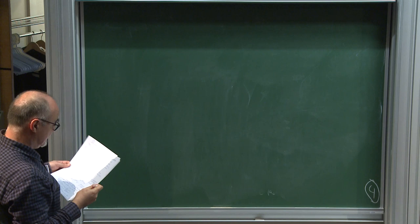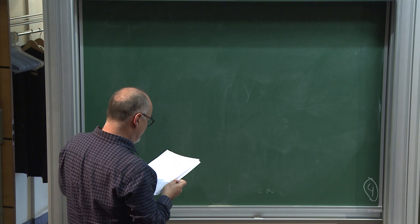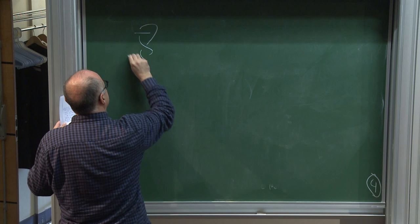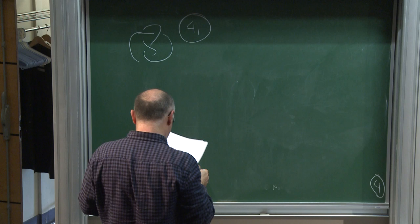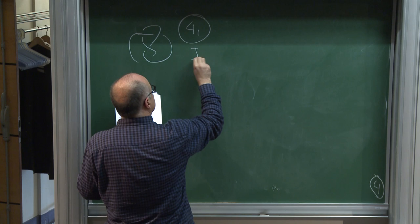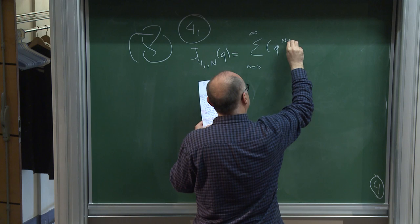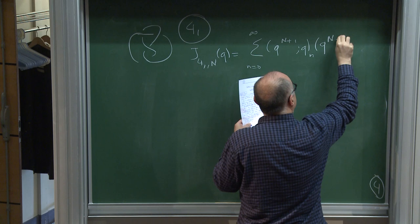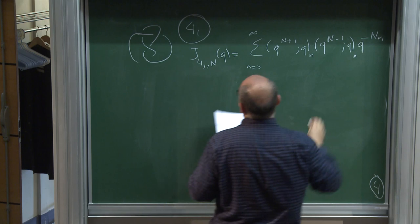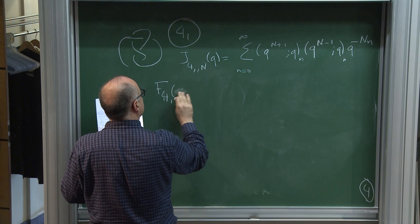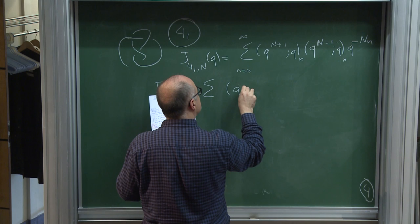After the trefoil comes the figure-eight knot. For that case, the colored Jones polynomial has a formula. The perturbative function Φ(q) is deceptively similar: it is Σ (q;q)_n · (q^{−1}; q^{−1})_n from 0 to infinity. This is also Gevrey-1. We have a little theorem with Thang Lê which says that for all knots, this series is Gevrey-1.